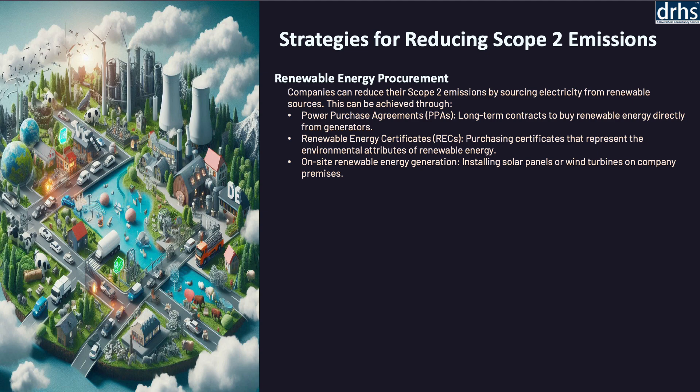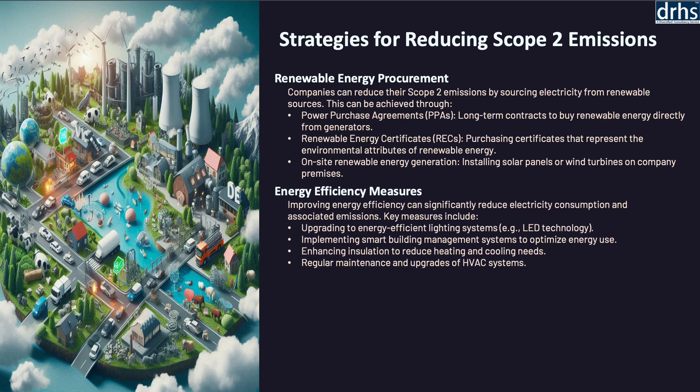The second strategy is Energy Efficiency Measures. Improving energy efficiency is another crucial approach. By optimizing energy usage through energy-efficient technologies such as LED lighting, high-efficiency systems, and energy management systems, organizations can reduce the amount of energy they need to purchase, directly lowering scope 2 emissions. Regular energy audits and the adoption of energy-saving practices further enhance efficiency, resulting in both environmental and cost benefits.